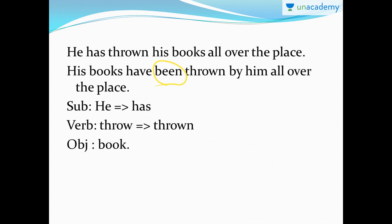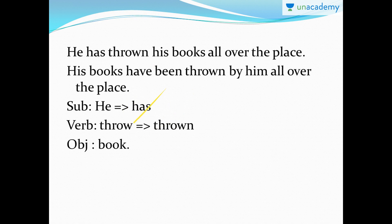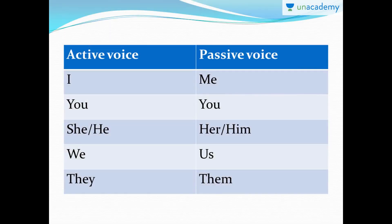'His books have been thrown all over the place by him' — either order is correct. Pay attention to the verb: 'throw' — past tense is 'threw,' past participle is 'thrown.' Subject 'he' turns into 'him,' 'thrown' is the past participle form, and 'books' is the object.